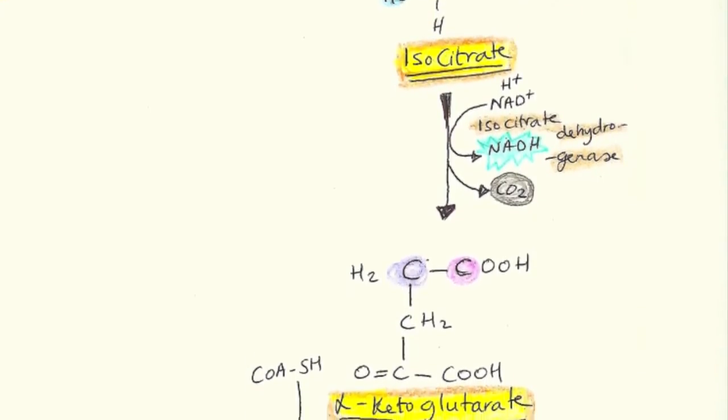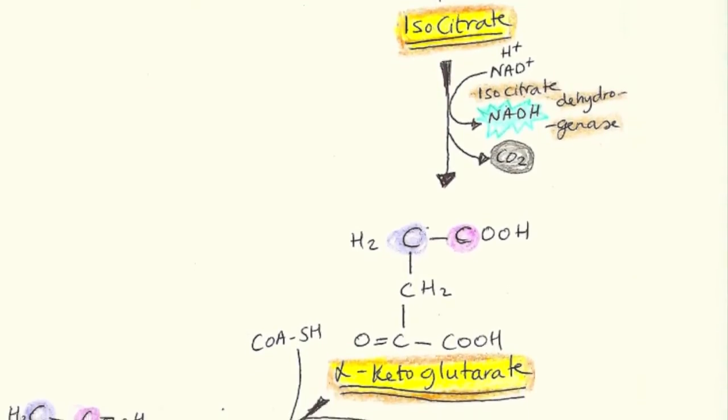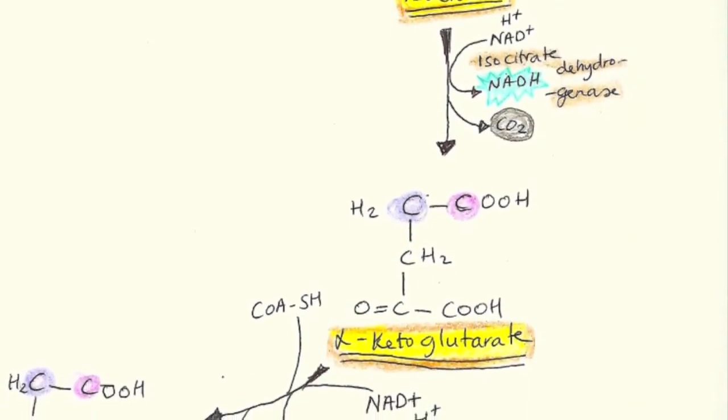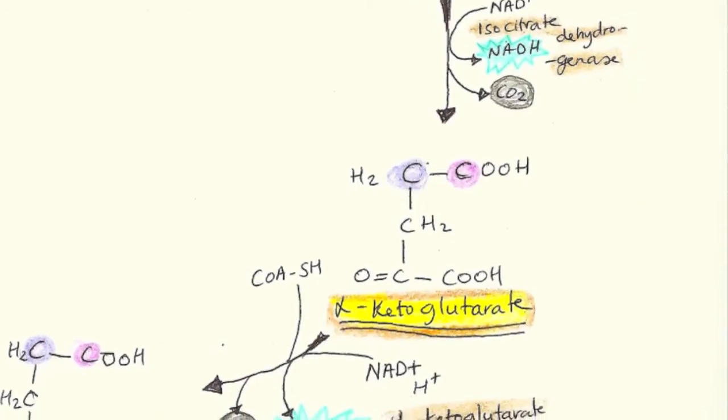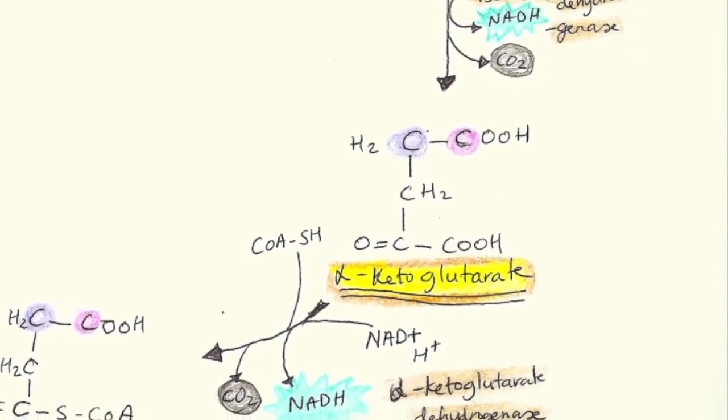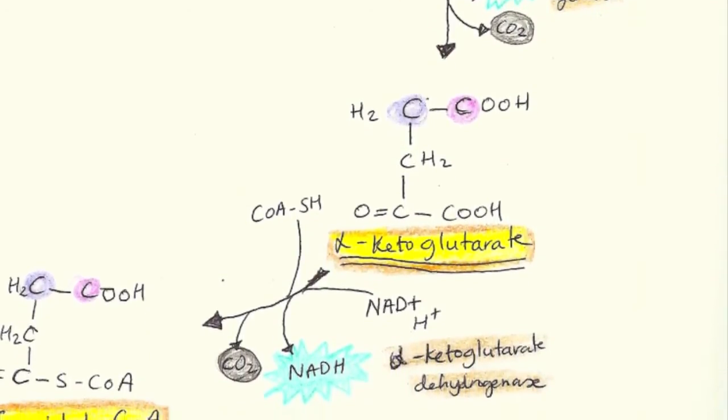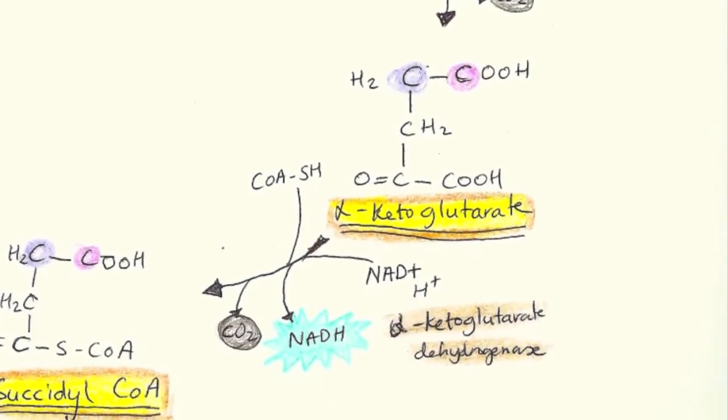Isocitrate then gets dehydrogenated by the enzyme, yes you guessed it, isocitrate dehydrogenase. This is when a carbon dioxide is given up. At the same time, NAD+ gets reduced to NADH.